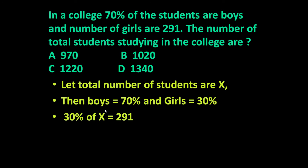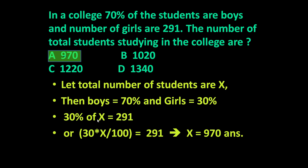Because the total number of students is x and the total number of girls is 291, and 70% are boys meaning 30% are girls, we get: 30% of x equals 291, which means 30 times x divided by 100 equals 291. We can now solve this equation to determine the value of x.